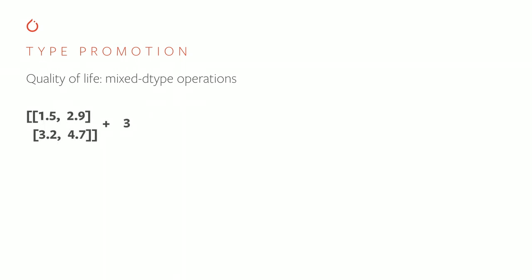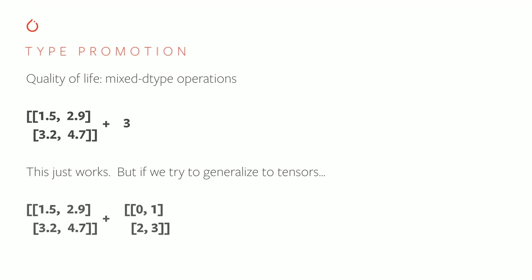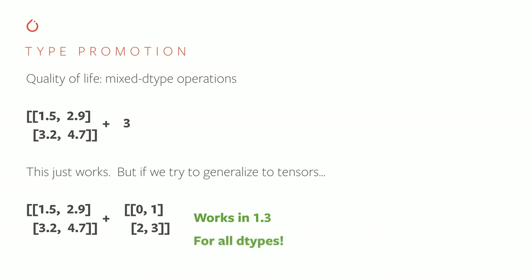Now I'll talk briefly about type promotion, which is a nice quality-of-life improvement added in version 1.3 around mixed-type operations. You may have seen PyTorch code that adds a Python number to a tensor — this just works even though the number is an integer and the tensor is floating point. But in previous versions of PyTorch, if you tried to generalize this to tensors and replace the integer number with an integer tensor, you'd get a dtype mismatch error. We've now generalized this feature to tensors — it works in 1.3 for all dtypes, and the type promotion system picks the minimal dtype that retains the fidelity of the data.